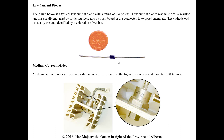Low current diodes — these are the ones we'll see most when we hook up our labs, also in battery chargers and welders. Three amps or less. Low current diodes resemble a half-watt resistor, usually mounted by soldering them into a circuit. The cathode is usually identified by a colored or silver bar, so we know which is the cathode and which is the anode in order to install it correctly.